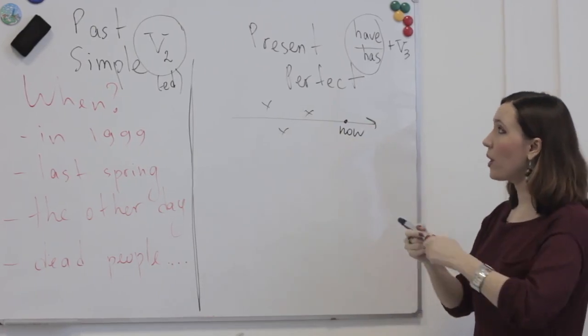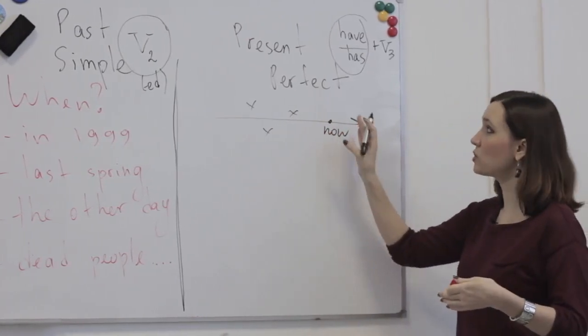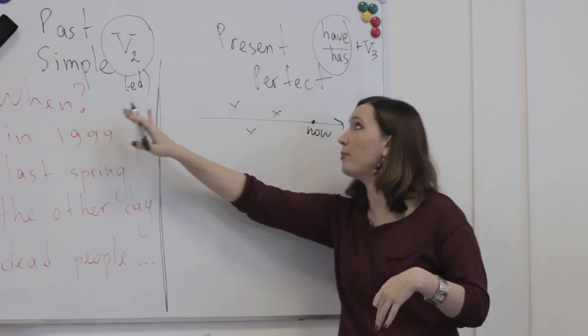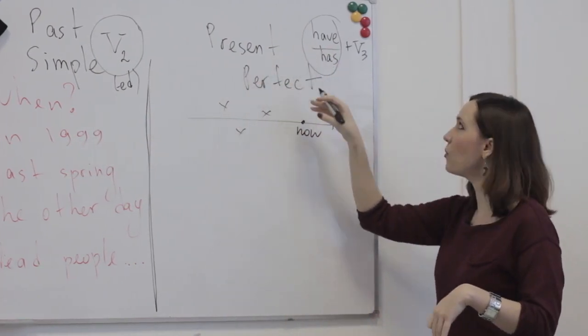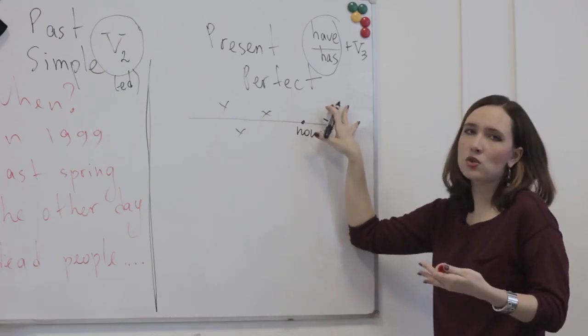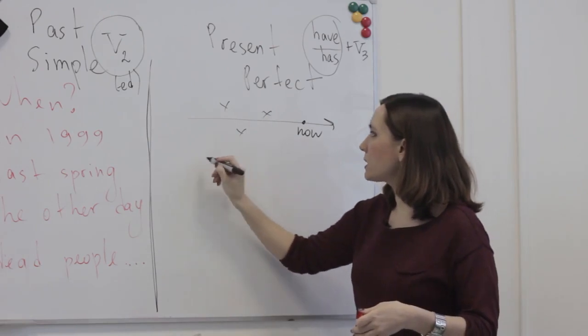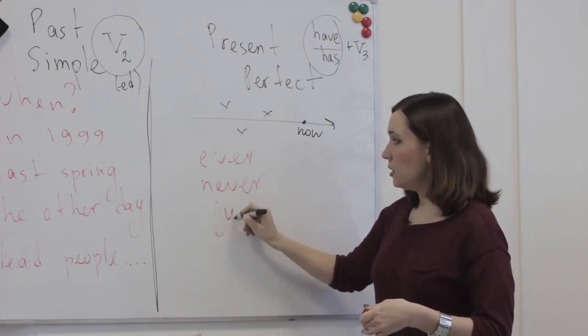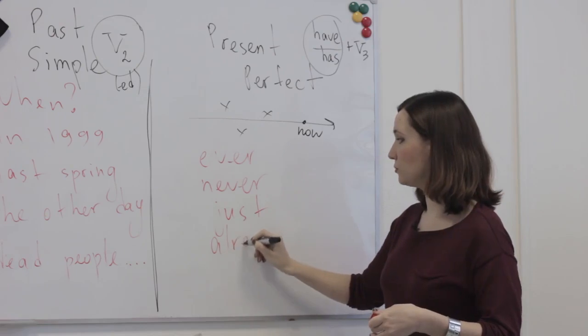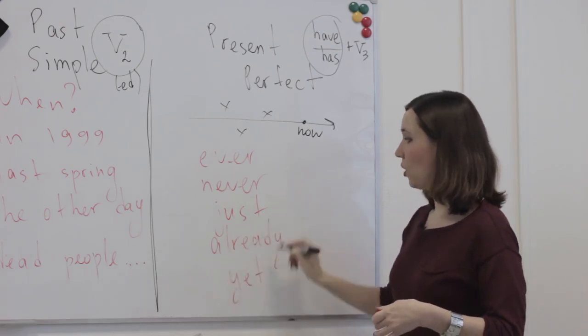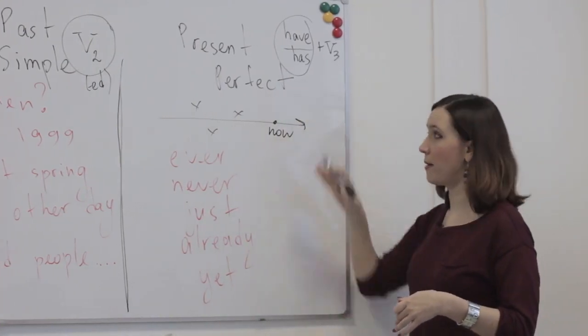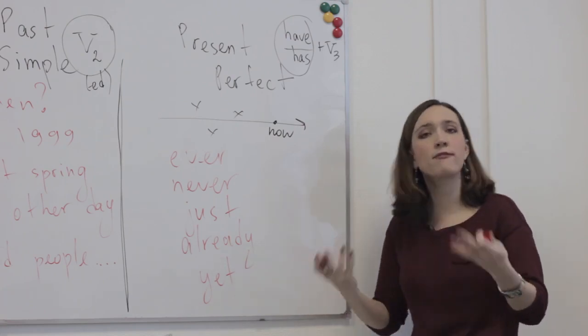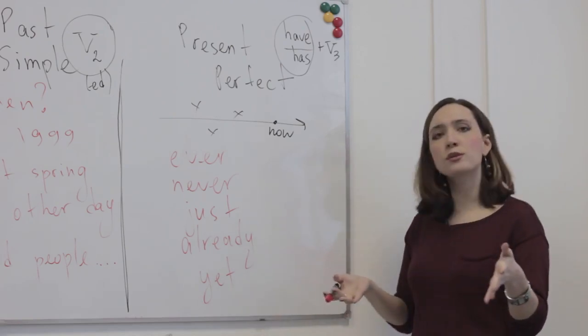So here we often also have the words that help us determine that we are talking about all life in general. It's not so important for us when something happened, but that it did in fact happen at some point, and it's somehow linked to our present condition. So it can be, you know, ever, or never, just, already, yet. All these words, they definitely determine this grammar. And also when you don't mention at all when it happened. You just say that you have had that in your life. So let's go with some examples.